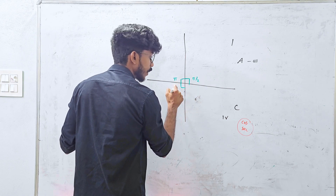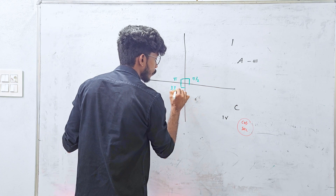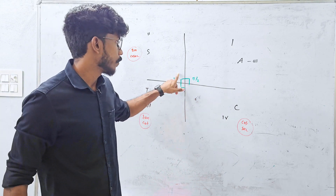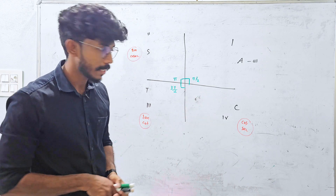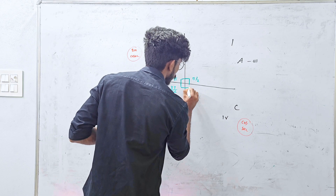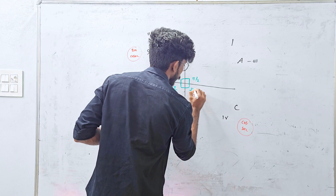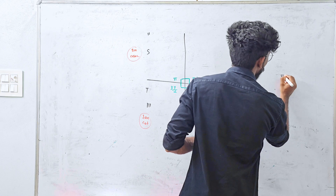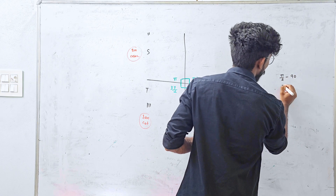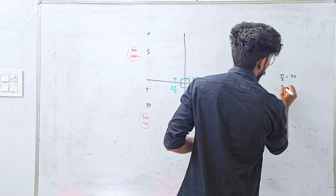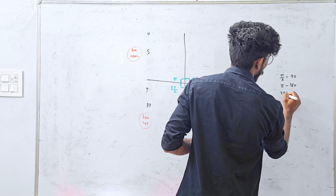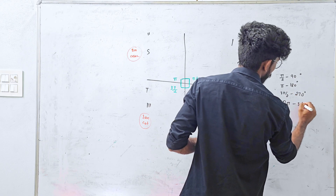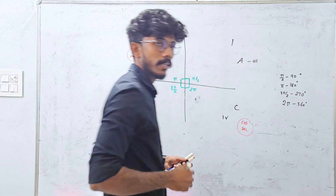90 degrees is π/2. 180 degrees is π. 270 degrees is 3π/2. And 360 degrees is 2π. So the key angles are: π/2 at 90°, π at 180°, 3π/2 at 270°, and 2π at 360°. The idea is clear.